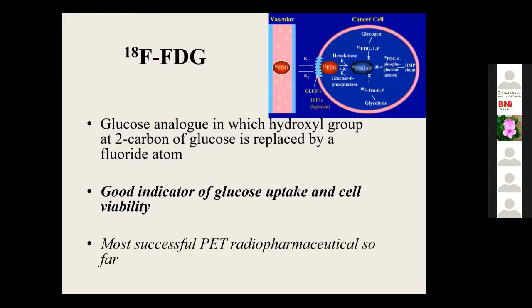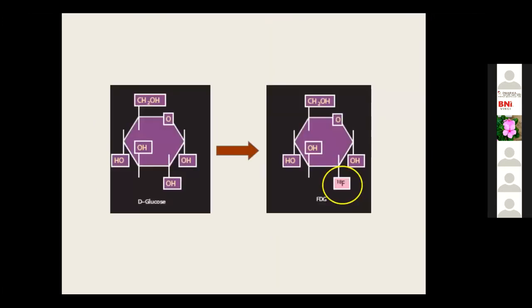About F18-FDG: F18 is the radionuclide and FDG is the pharmaceutical; combining both gives us the radiopharmaceutical. FDG is a glucose particle in which we replace the hydroxyl molecule at carbon-2 with F18. After replacing this hydroxyl molecule, it is not part of the normal glycolysis pathway.